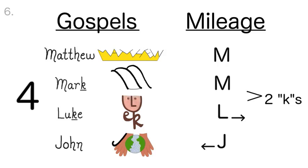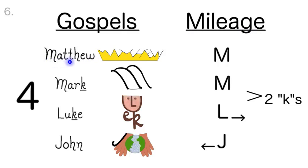You can think the Gospels record all the mileage Jesus traveled on our earth to teach us and show us the way to salvation. The two M's in Matthew and Mark are for the M in mileage, and the L in Luke for the L, and the J in John for the G in mileage that makes the J sound.